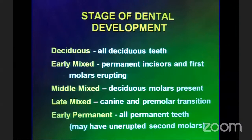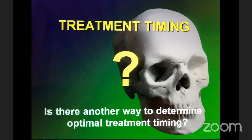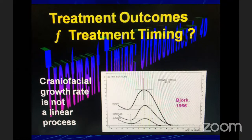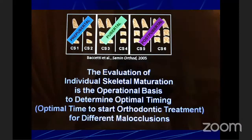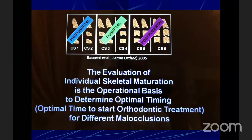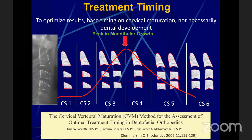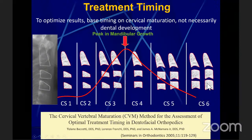The chronological timing is not the right way to judge skeletal maturity in patients. So is there any other way to determine optimal treatment timing? Treatment outcome is a function of treatment timing, because craniofacial growth is not a linear process. We need biological indicators for skeletal maturity. The evaluation of individual skeletal maturation is the operational basis to determine the optimal time to start orthodontic treatment for different malocclusions.